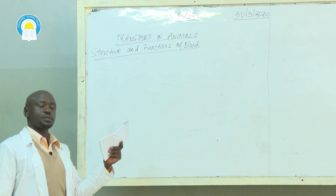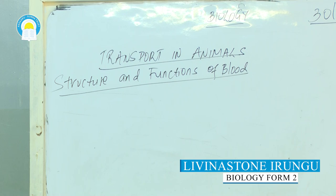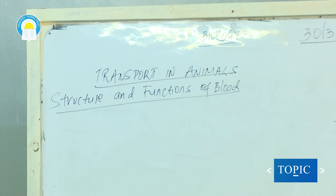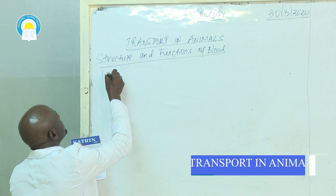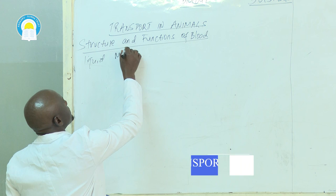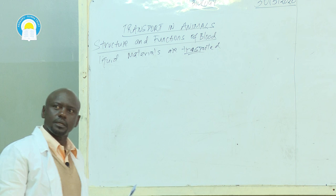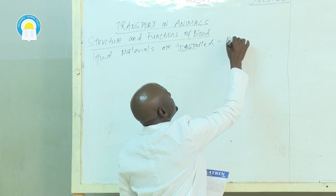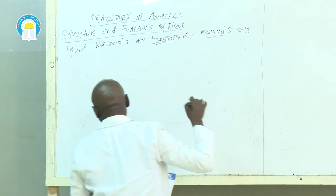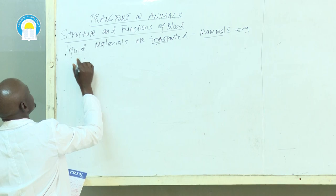Good morning. Our major topic is transporting animals, and we are going to discuss the subtopic: structure and functions of blood. First of all, we need to know what blood is. Blood is the liquid in which materials are transported. So the major function of blood is transport, and what we are discussing is mainly what happens in mammals — the best example being human beings.